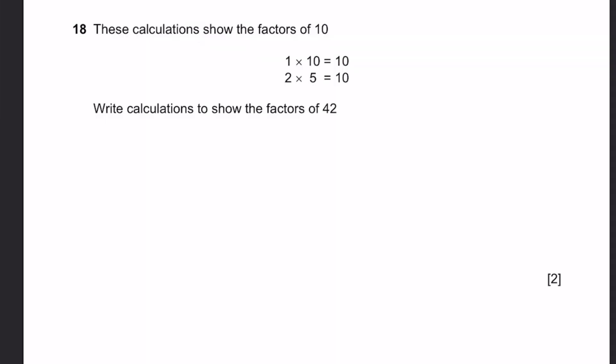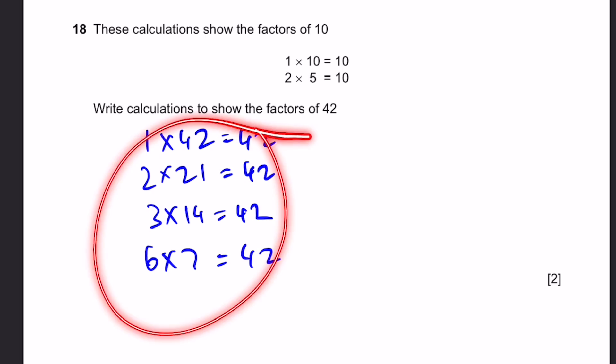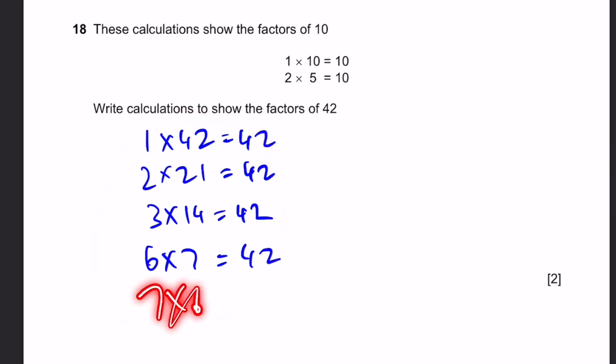Question 18. These calculations show the factors of 10. Write calculations to show the factors of 42. So we can write 1 into 42 equals 42. 2 into 21 equals 42. 3 into 14 equals 42. 6 into 7 equals 42. And that's it, because after this we have 7 into 6, which is simply a repeat of 6 into 7. That's the answer.